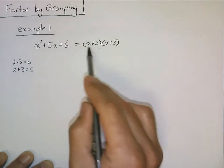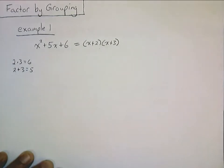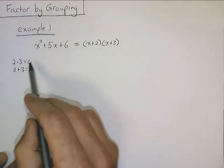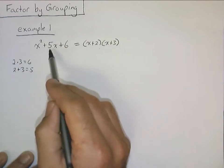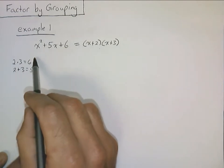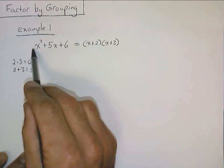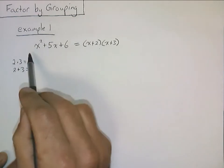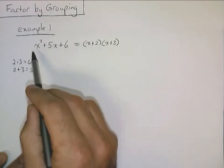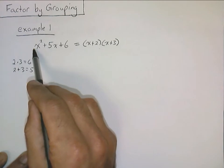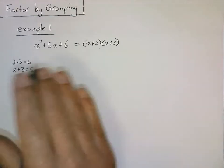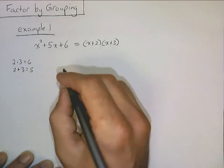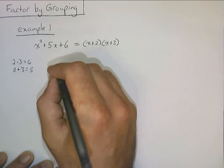We can check that just by multiplying this out and we'll see if we get it right back. I kind of lied to you in the last video about this though, because really we don't want just two numbers that multiply together to give you 6 but add together to give you 5. We really want two numbers that when you multiply them together you'll get 1 times 6. So what we're learning now is going to work when this coefficient of x squared is not 1. Let's see how this is going to work going through this example — we're going to factor this by grouping.